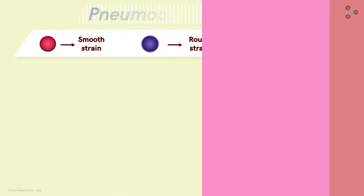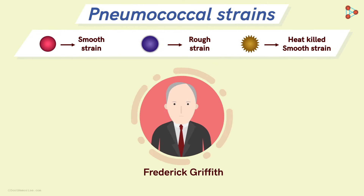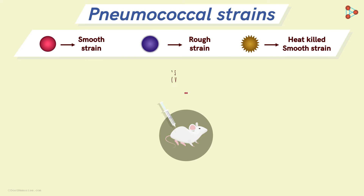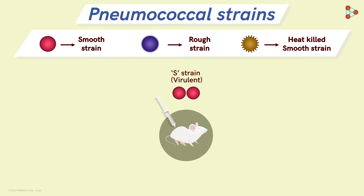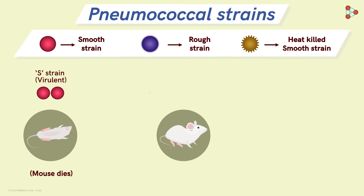Getting back to Griffith's work, let's see what experiment he exactly performed. He first injected a mouse with the S strain — the smooth strain of the pneumococci. As expected, the mouse died. Similarly, on injecting another mouse with the rough strain, the mouse survived.